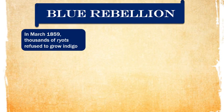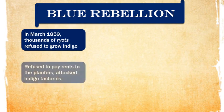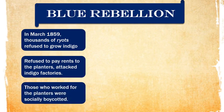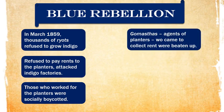Thousands of ryots refused to grow indigo because they were not happy with the actions of the planters and were not getting a sufficient price for their crops. Ryots also refused to pay rents to the planters and attacked the indigo factories run by the planters. Those who still worked for the planters were socially boycotted.